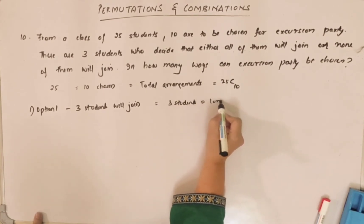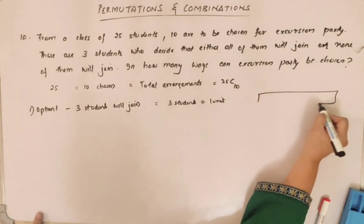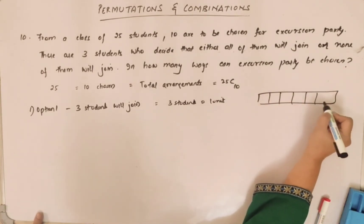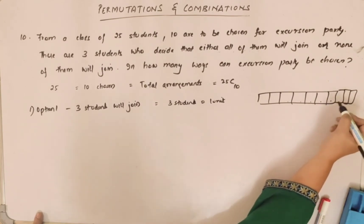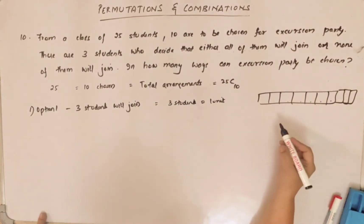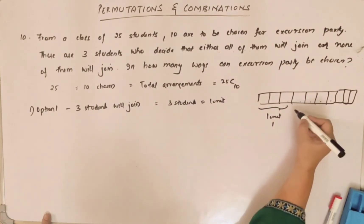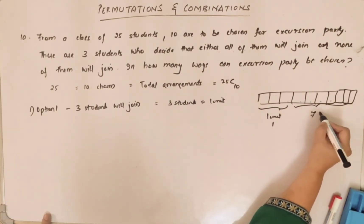Students as one unit. So you have 10 students to be chosen. Three students as one unit because they are going to join. There are no further arrangements here. All three of them are going to join, so it's only one unit or one way.